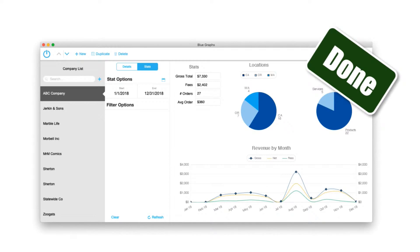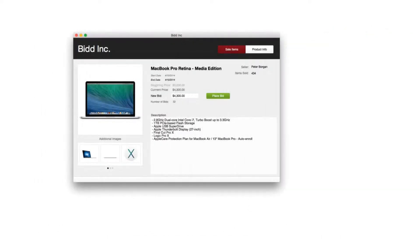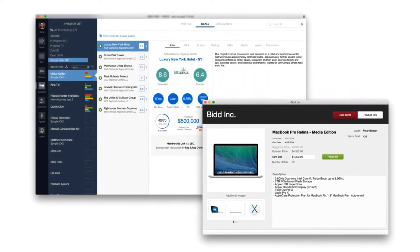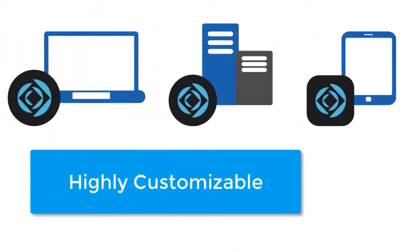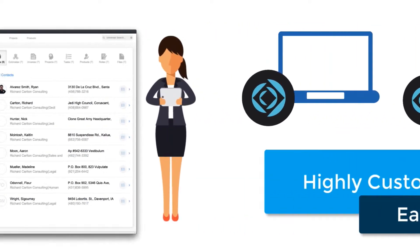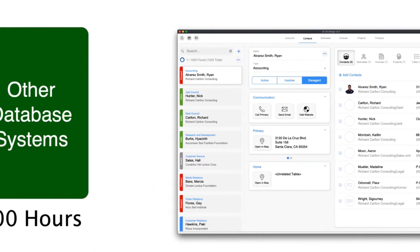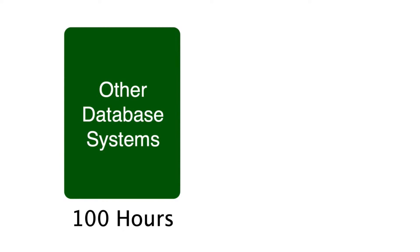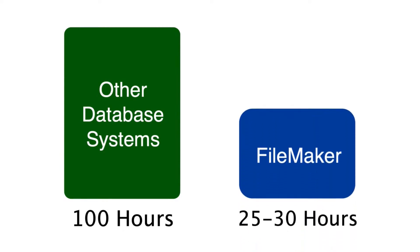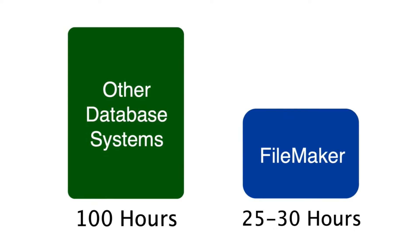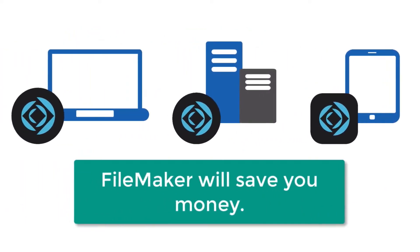The FileMaker platform has the ability to build both simple and complex custom applications — it's extremely powerful. The true benefit is that it is highly and easily customizable to your needs. A typical IT organization might quote 100 hours of labor to build a custom app. My experience shows you can solve the same kind of problem with a FileMaker custom app in only about 25 to 30 hours of labor — that's a dramatic savings.